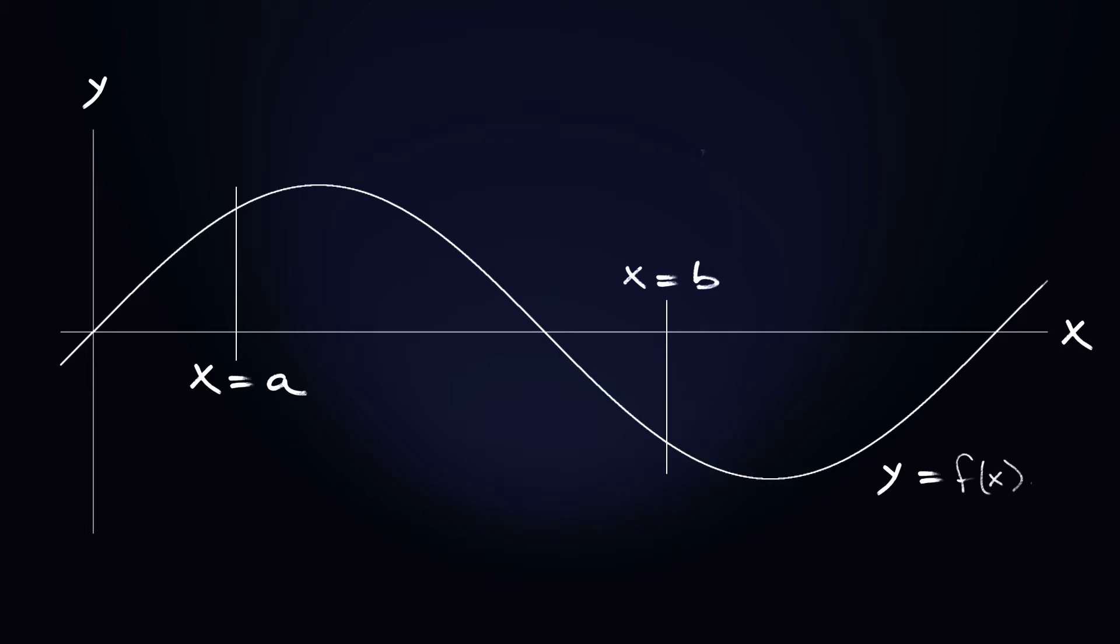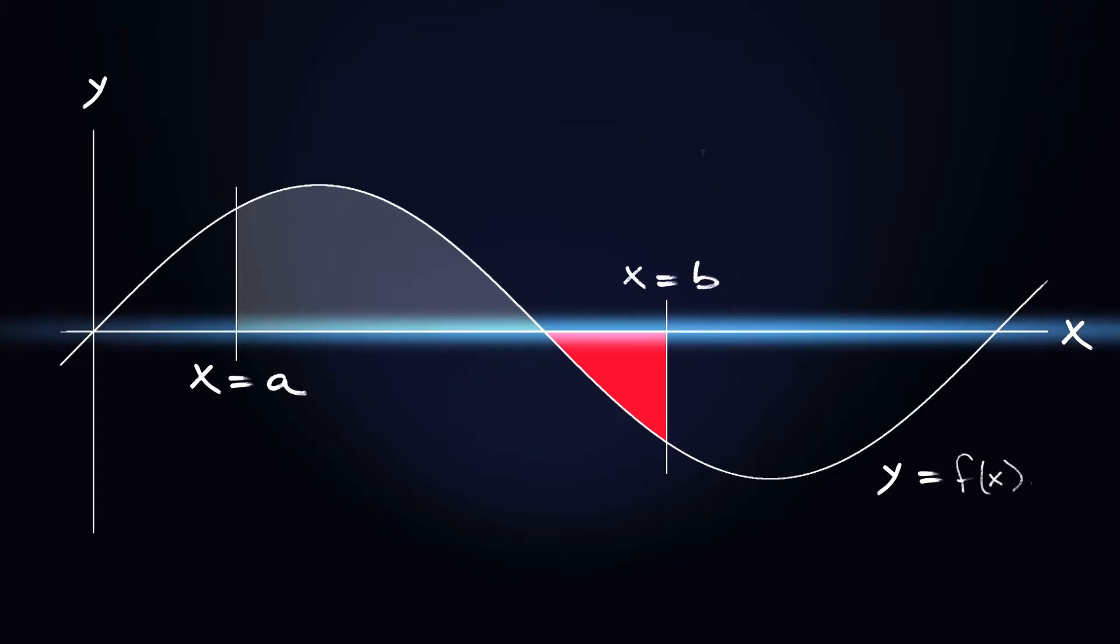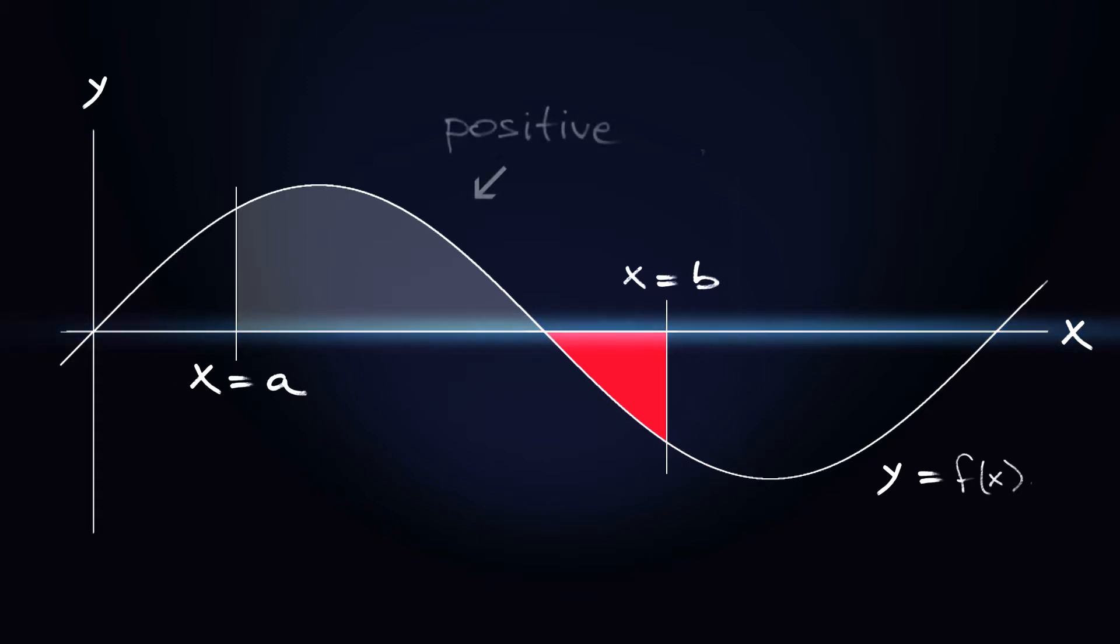y equals f(x). The positive area is the grey part and the negative area is the red part, and that is measured with relation to the x-axis, which has the equation y equals zero. So positive contributions are grey and negative contributions are red here.